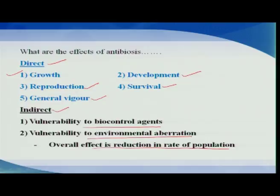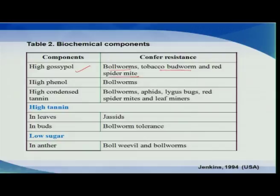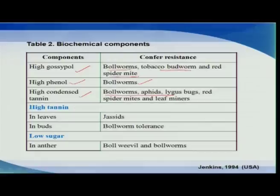Some biochemical components are grouped here: high gossypol content confers resistance against bollworm, tobacco budworm, and spider mite. High phenol content and condensed tannin also confer resistance to the bollworm. High tannin content present in leaves provides resistance against jassids; when present in buds, it provides resistance against bollworm attack. Similarly, low sugar content in the anther imparts resistance to the boll weevil and bollworm.